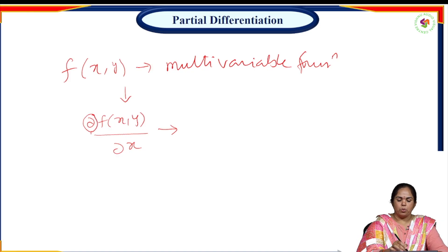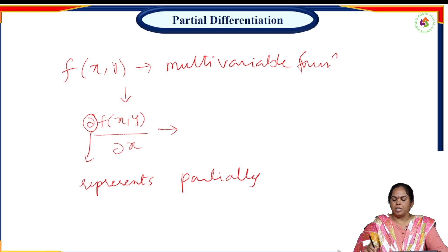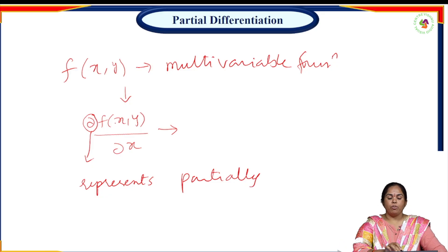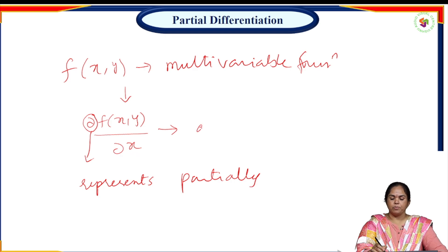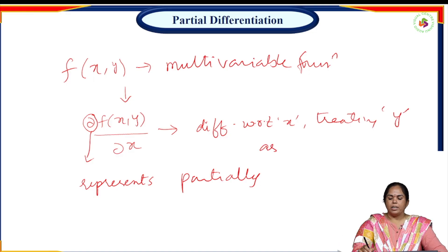The symbol ∂ (dou) represents 'partially'. So ∂f(x,y)/∂x means here we are differentiating with respect to x, treating y as constant.